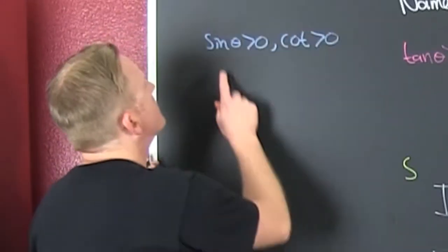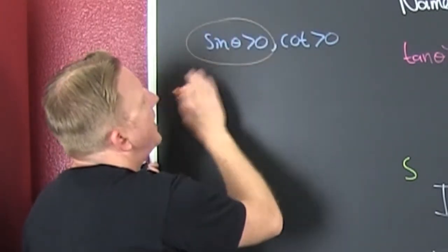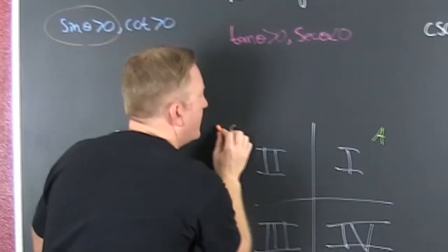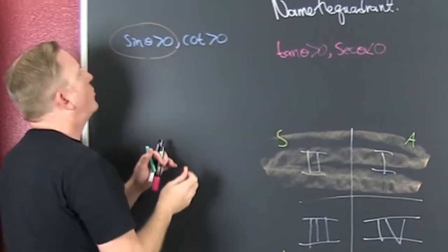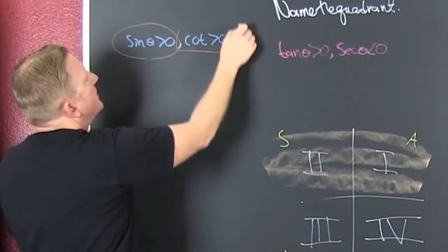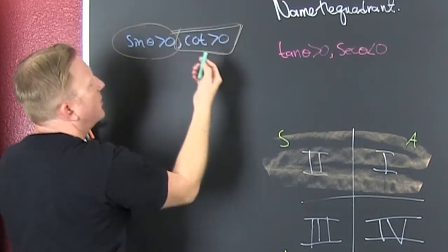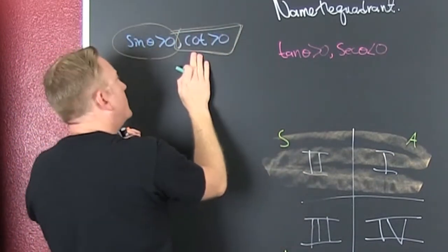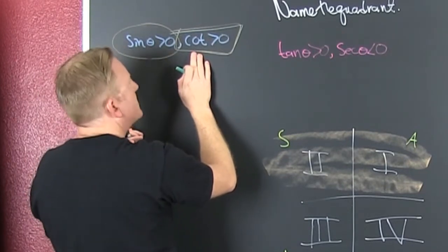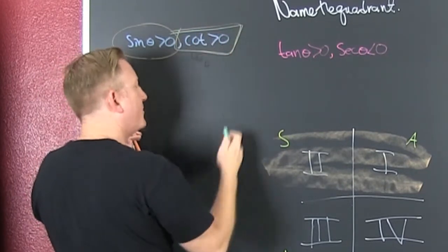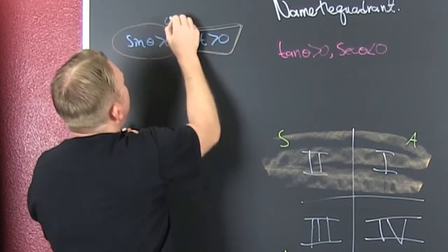So I'm looking at sine greater than zero. Sine is y, so sine is greater than zero in the top half — quadrants one and two. Now, the cotangent has the same sign as the tangent because it's the reciprocal, so they necessarily have the same sign.